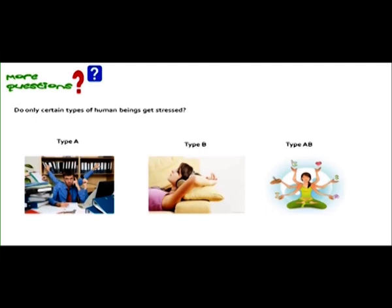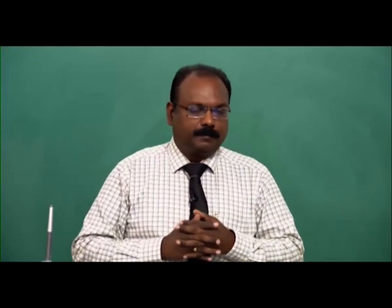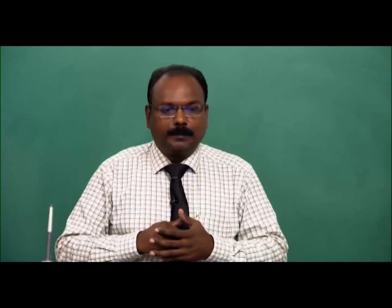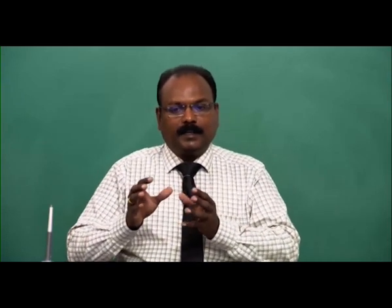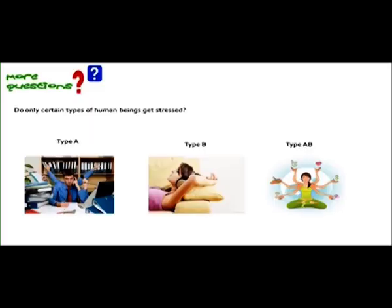There is a misgiving about stress. People ask: do only certain types of human beings get stressed? There is the famous psychological typology — discussed a lot in management — of Type A, Type B, and Type AB personalities. The Type A is the go-getter, very aggressive, wants to achieve many things quickly. There is a thinking that it is the Type A person who gets into stress all the time.